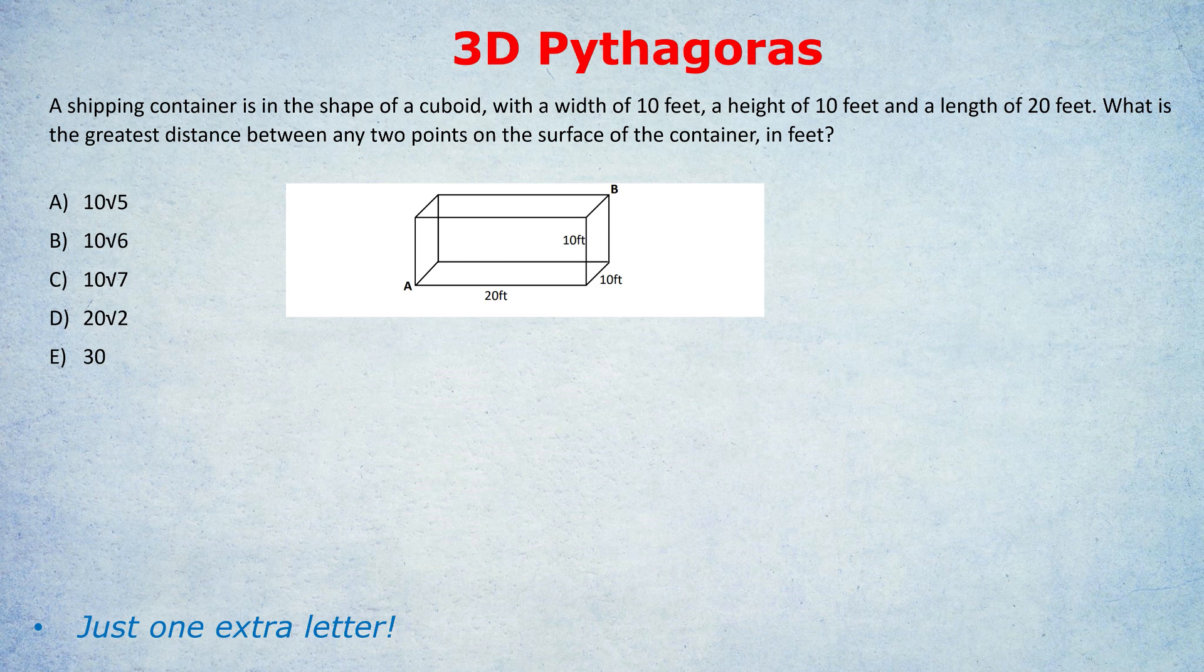That would be the greatest distance between any two points on the surface. A is a point on the surface, B is a point on the surface, and the distance between them is the greatest possible distance between any two points on the surface. Now many students would struggle to work out that distance or they would use a quite convoluted method. Maybe they'd use two-dimensional Pythagoras to work out the length between A and the top right corner of that front surface, and then they'd do an extra bit of Pythagoras to work out other lengths and hypotenuses, but that's quite hard. So I'm here to give you the shortcut.